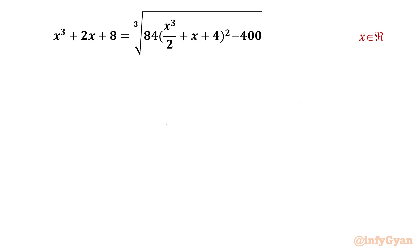Welcome back to Infigyan friends. Today in this video we are going to take up one very interesting and incredible radical equation challenge. It is x³ + 2x + 8 = ∛(84 · (x³/2 + x + 4)²) − 400. We have to find out real solutions only.